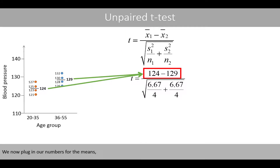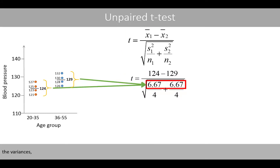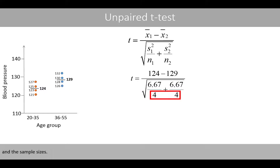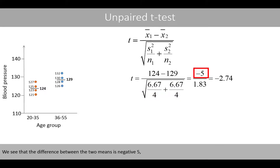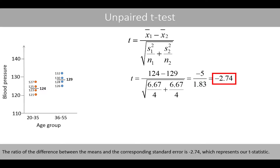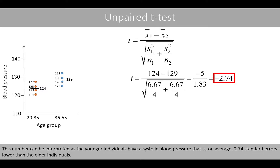We now plug in our numbers for the means, the variances, and the sample sizes. We see that the difference between the two means is negative 5, and the standard error of this difference is about 1.83. The ratio of the difference between the means and the corresponding standard error is negative 2.74, which represents our t-statistic. This number can be interpreted as: the younger individuals have a systolic blood pressure that is, on average, 2.74 standard errors lower than the older individuals.